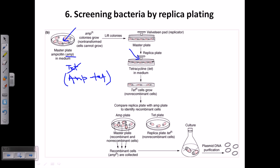We take an imprint onto the velvet pad and press it onto the new medium — this is called the replica plate because it creates an actual replica of the master plate. We then place it onto the tetracycline-containing medium.